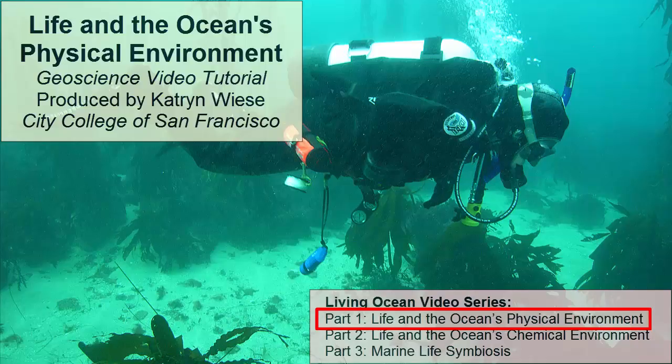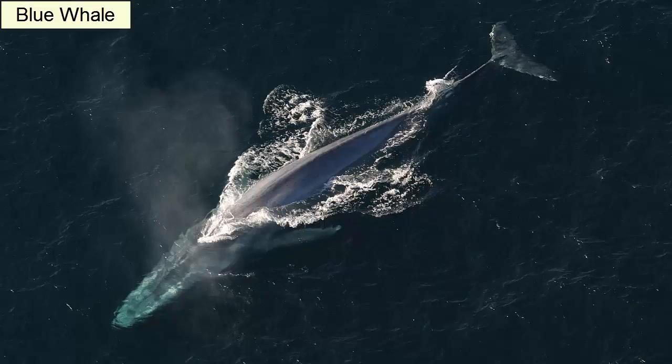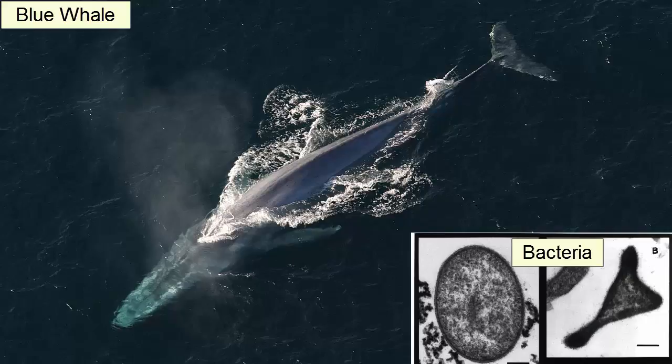Marine life in the oceans includes organisms of all sizes, shapes, and character — from the smallest bacteria and protists, single-celled heterotrophs and autotrophs visible through only the highest power microscopes, to the largest organism on planet Earth, 30 meters or 100 feet long: the blue whale. Each of these organisms interacts with and is affected by the oceans in different ways.